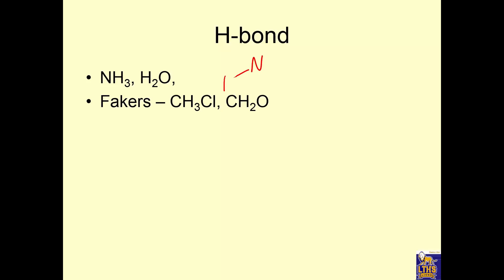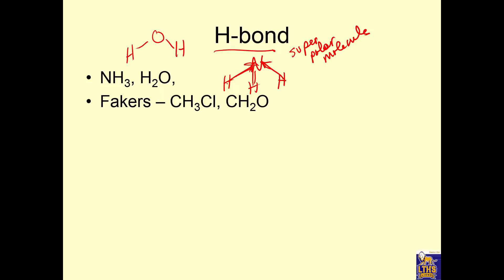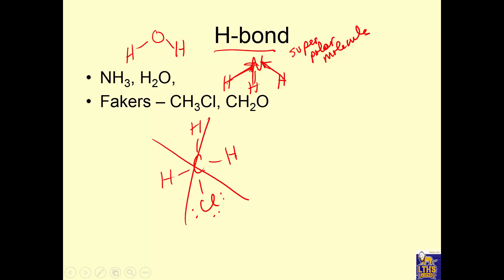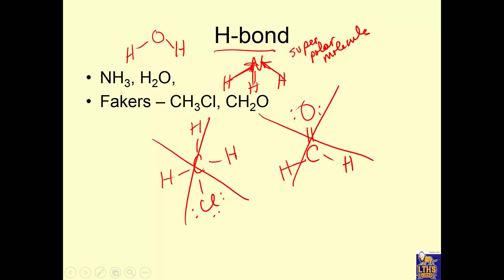Hydrogen bonding. This molecule has N with H bonded to it. So this is a polar bond, polar molecule, and the bonds have hydrogen and nitrogen — so it's going to be superpolar. Same with H2O because the H is bonded to the O. But CH3Cl cannot have hydrogen bonding because the H's are bonded to carbon. The H has to be bonded to an O, N, or F. Even if a molecule looks like it might have hydrogen bonding, you look at the dot structure and see the hydrogen is bonded to a carbon — so it cannot hydrogen bond.